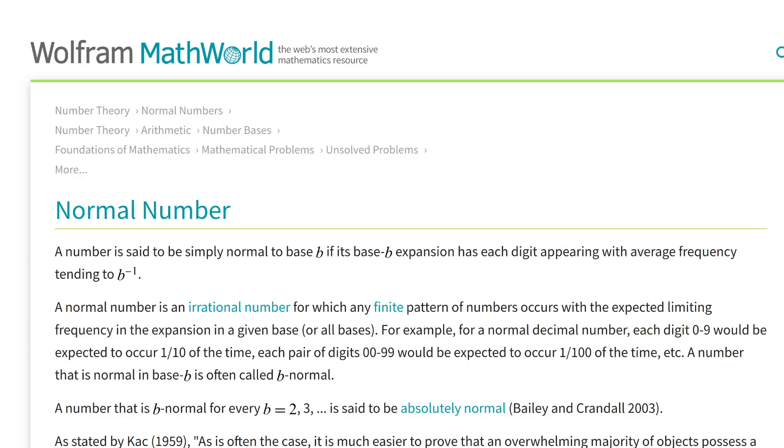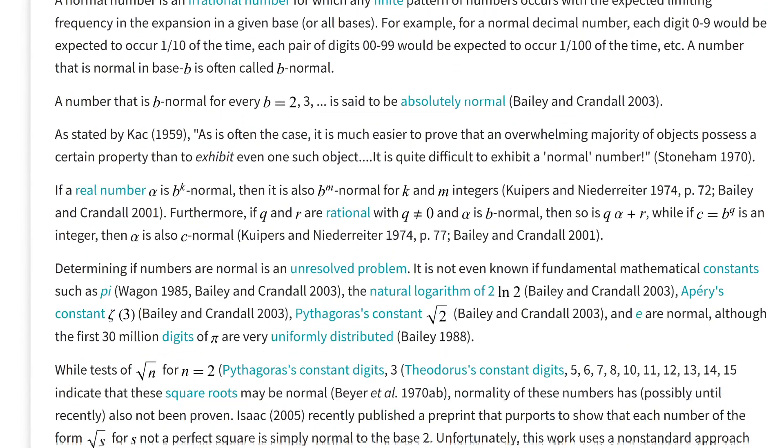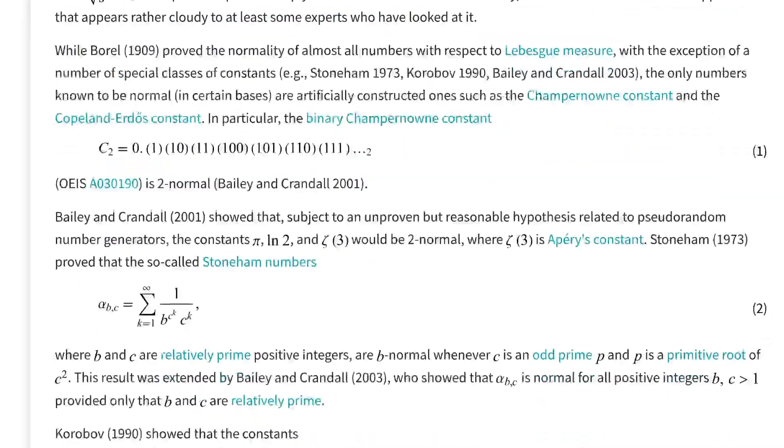Anyway, if pi is a normal number, not only does every digit occur equally often, but also every string of digits.